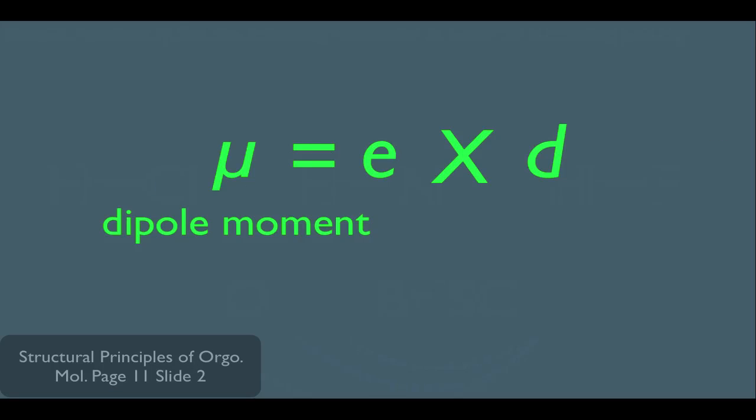It follows this equation: dipole moment is equal to E times D. E is simply the charge on each atom in the bond, and D is the length of the bond. When you apply this formula to a bond and calculate its dipole moment, this formula spits out the units of dipole moment as something called a Debye, which is usually denoted by a capital D.